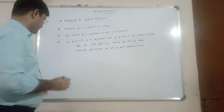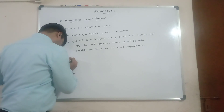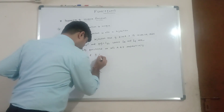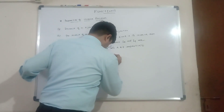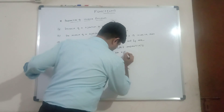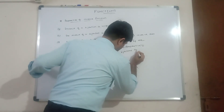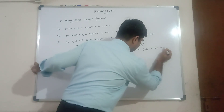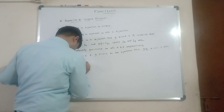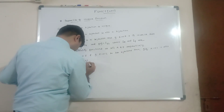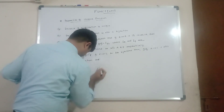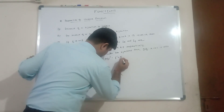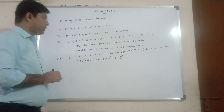Property 4: if f from set A to set B and g from B to C are two bijections, then g∘f from A to C is also a bijection, and (g∘f)⁻¹ = f⁻¹ ∘ g⁻¹.